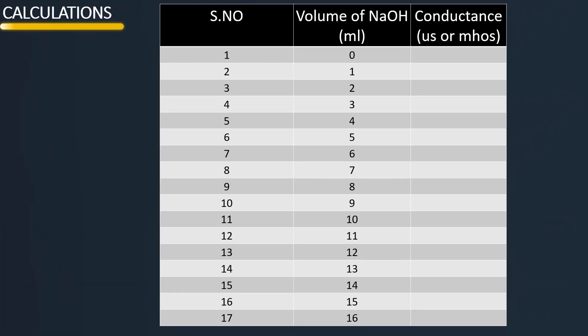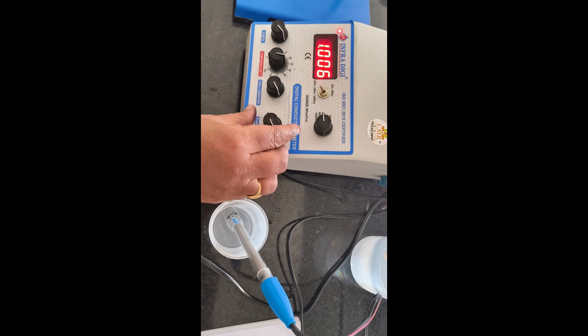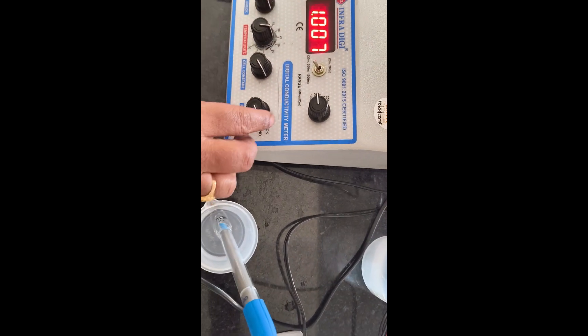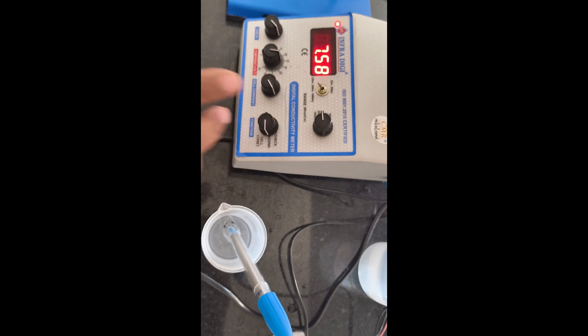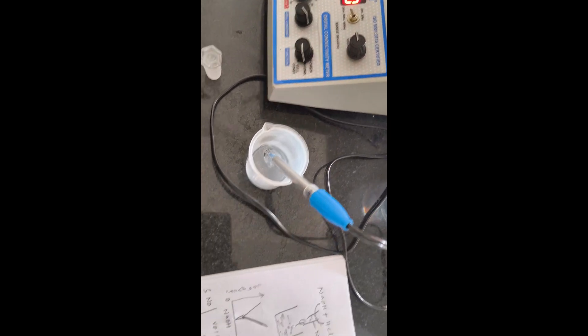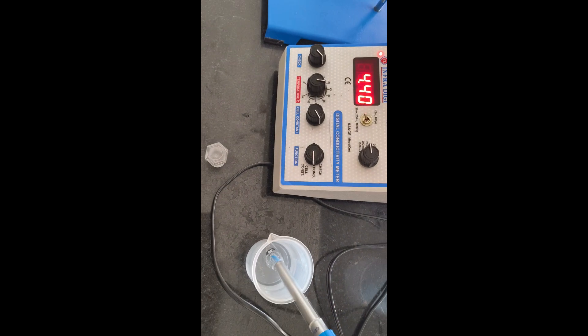Observing the table: columns are serial number, volume of NaOH, and conductance. At serial number 1, with 0 ml NaOH — that is, without adding NaOH — the conductivity of the acid solution is noted. The meter is switched to conductance position and we note down the conductance of the acid solution.